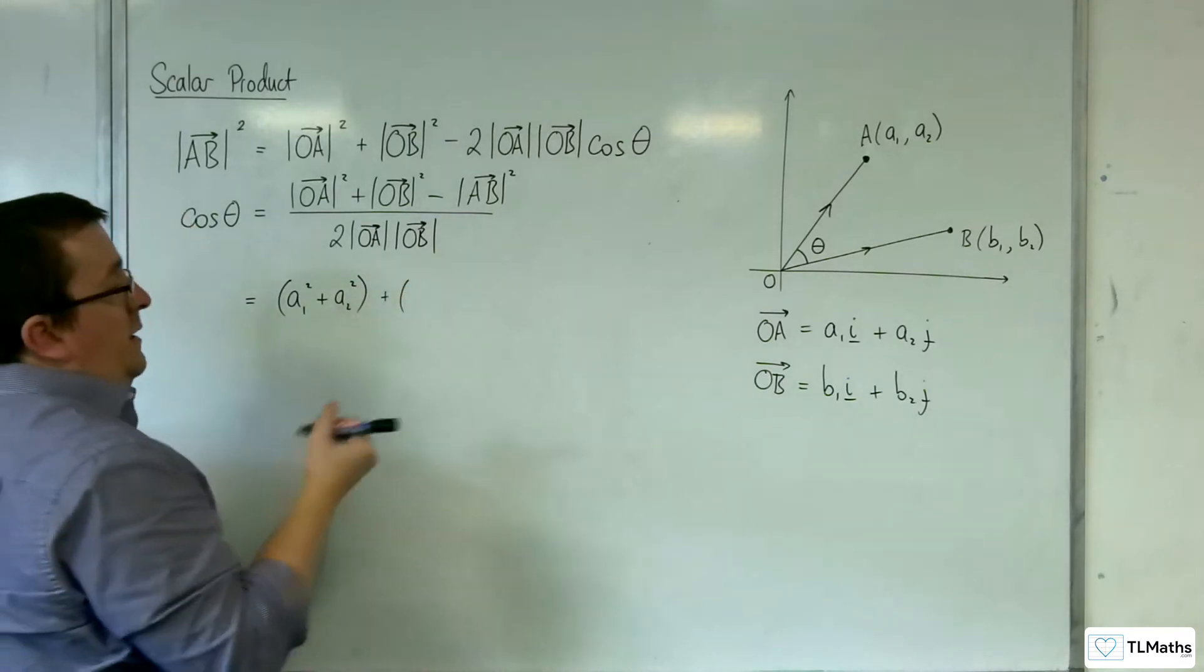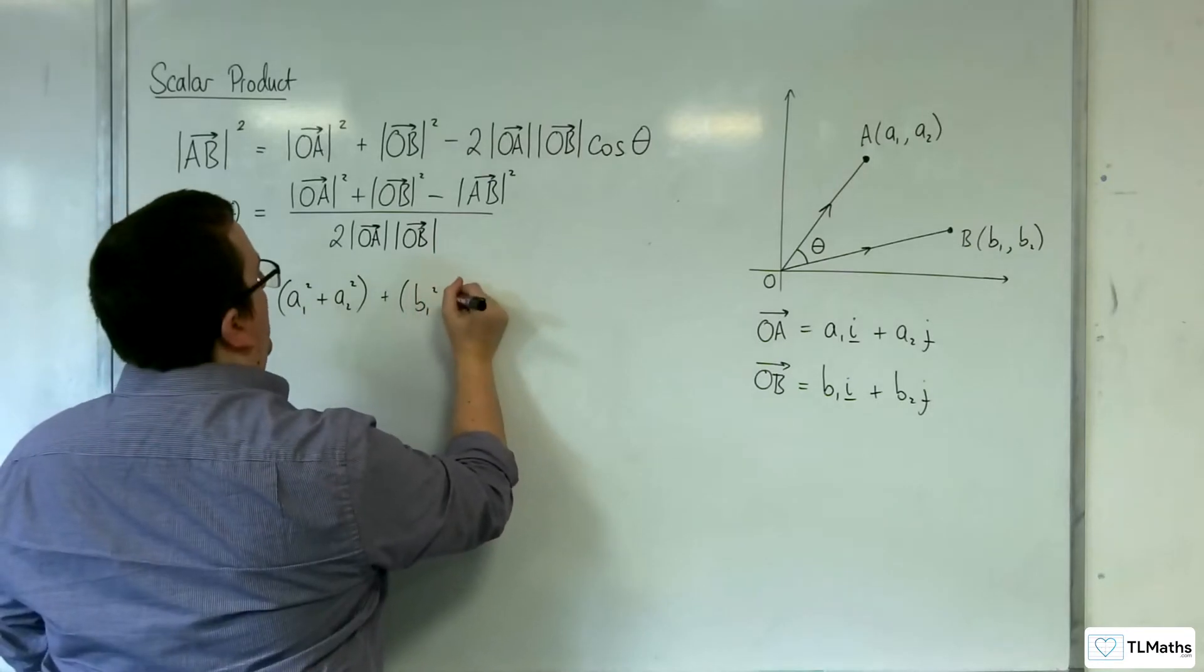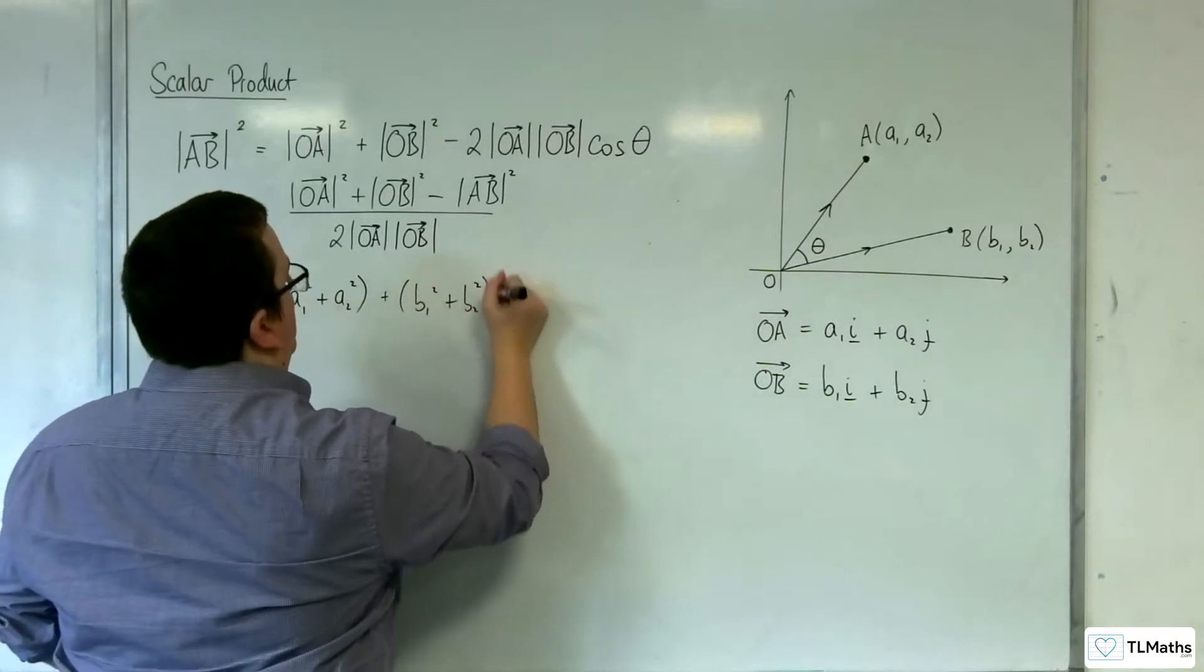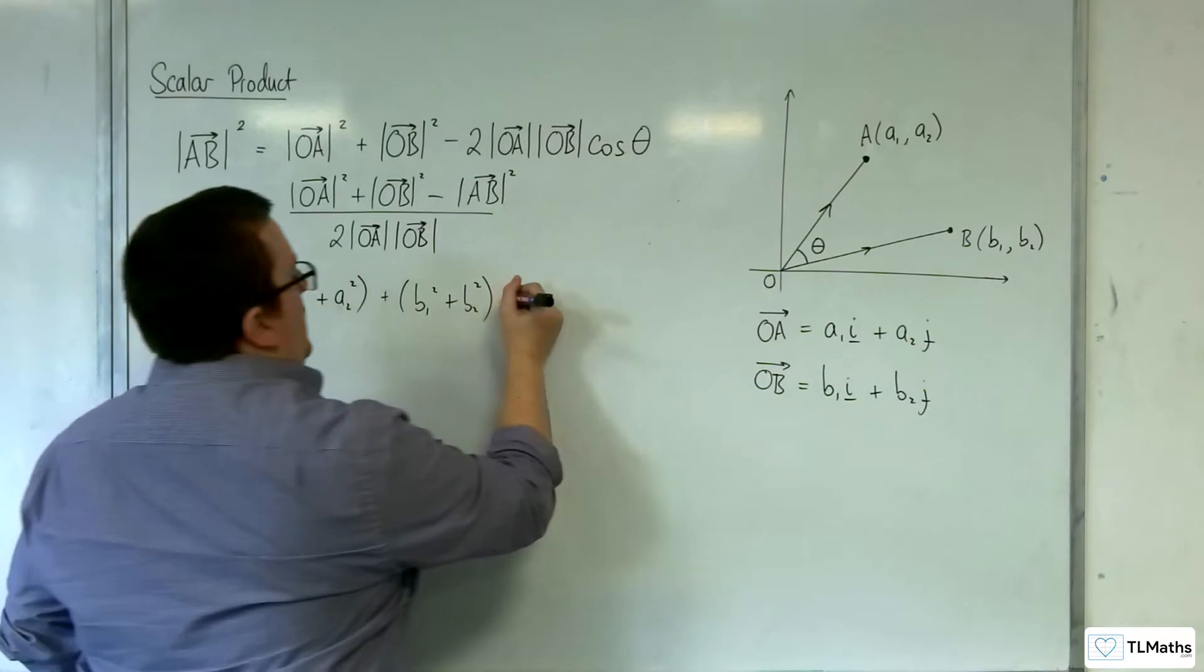Plus, now OB, same thing, so B1 squared plus B2 squared, like so. So then take away, so then we've got to have the vector AB.